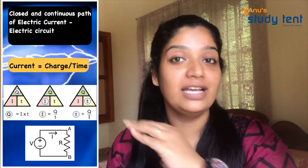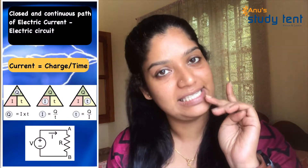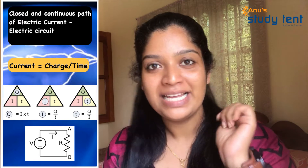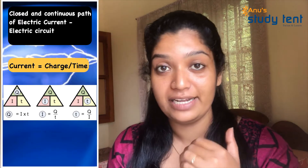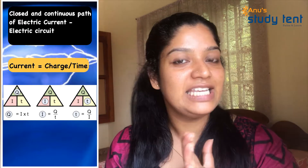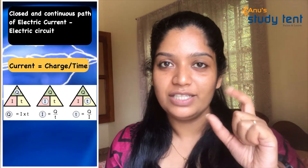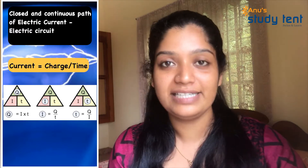We see that this is an electric charge flow through a closed path of an electric circuit. The equation for current is: i is equal to q upon t. The current is equal to charge divided by time. That equation is important.